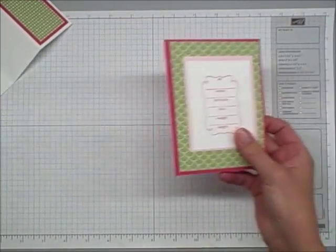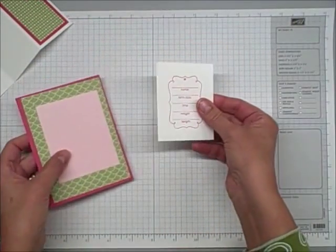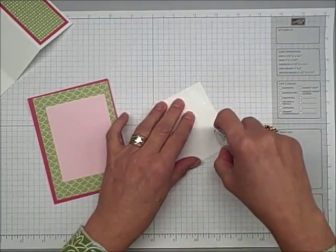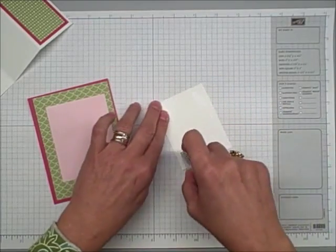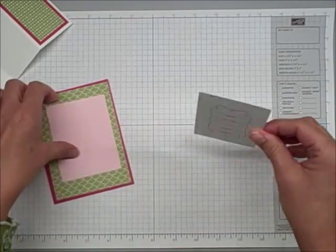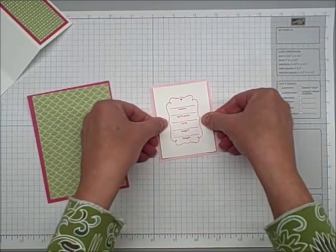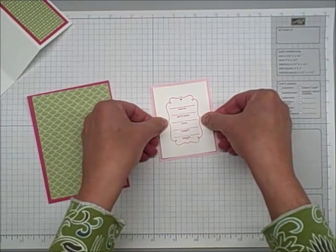I'm going to do the same for the other side. All right. But then the next part, I've actually pre-stamped this particular announcement piece. Again, you can use any kind of sentiment that you want. You can decorate it any way that you want.